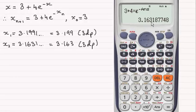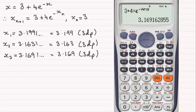decimal places this is 3.163. Let's look at x₃: 3.1691, to 3dp it's 3.169, not settled down yet. Press